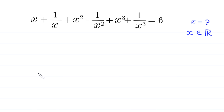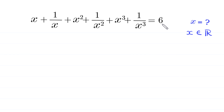Hello, welcome to how to solve this very nice algebra equation: x plus 1 over x, plus x squared plus 1 over x squared, plus x cubed plus 1 over x cubed, is equal to 6. We need to find all possible real values of x.